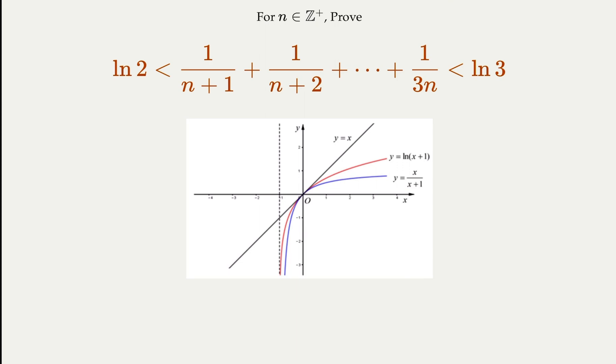We want to prove the summation here from 1 over n plus 1, 1 over n plus 2, up to 1 over 3n. We claim that that value is in between log 2 and log 3.